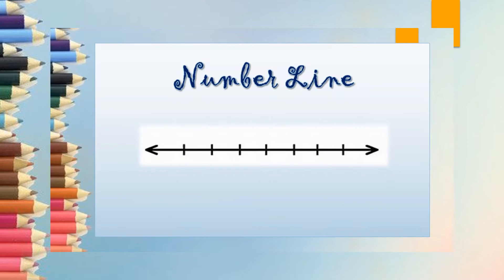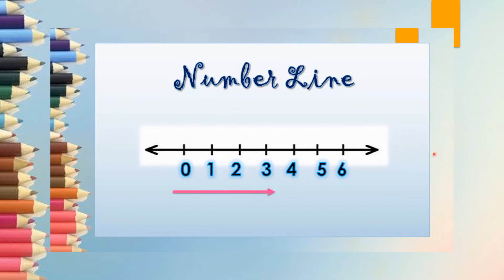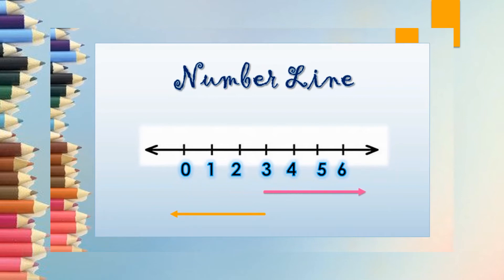When you are drawing a number line and writing the numbers, they go on increasing if we go to the right hand side, and they keep on decreasing if we go to the left hand side. For example, going from 0 to 5, the value increases. But going from 5 to 2 — 5, 4, 3, 2, 1 — the value is decreasing. So remember: on the right hand side the value increases, and on the left hand side the value decreases.